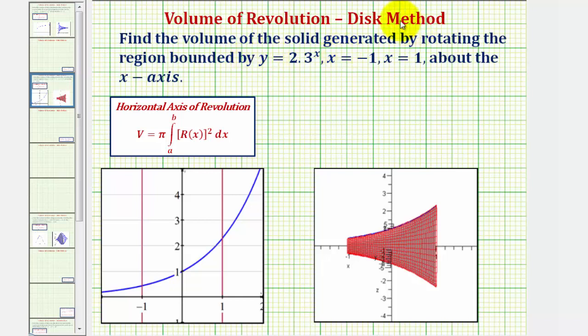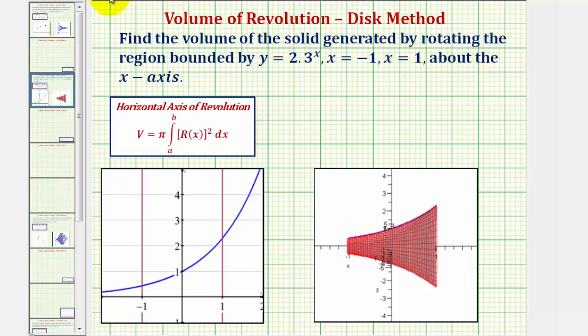We want to use the disk method to find the volume of the solid generated by rotating the region bounded by y equals 2.3 raised to the power of x, x equals negative one, x equals one, about the x-axis.